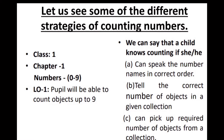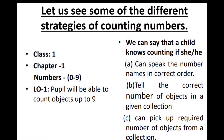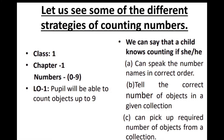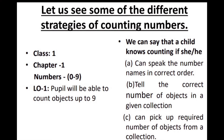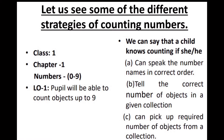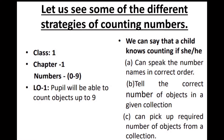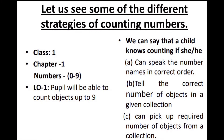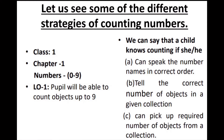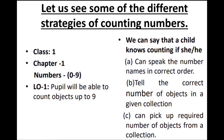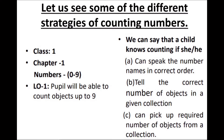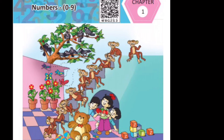Today's demonstration session covers Class 1, Chapter 1: Numbers 0 to 9. The defined learning outcome is: children will be able to count objects up to nine. Specific objectives include: children will be able to count numbers up to nine in sequence, count objects without missing any, and identify and pick required objects from a given collection.